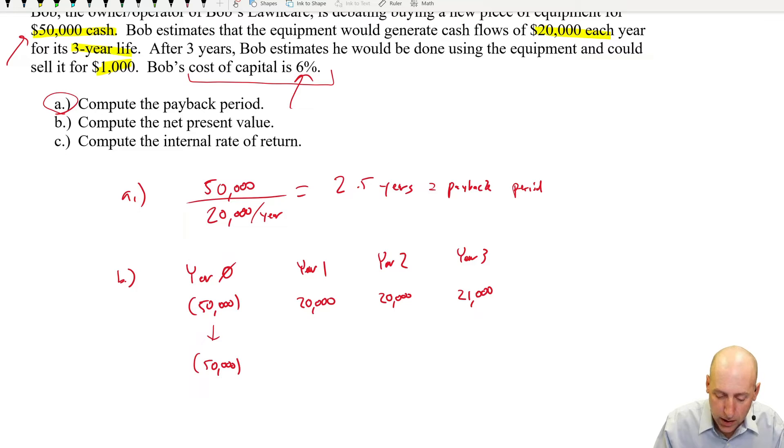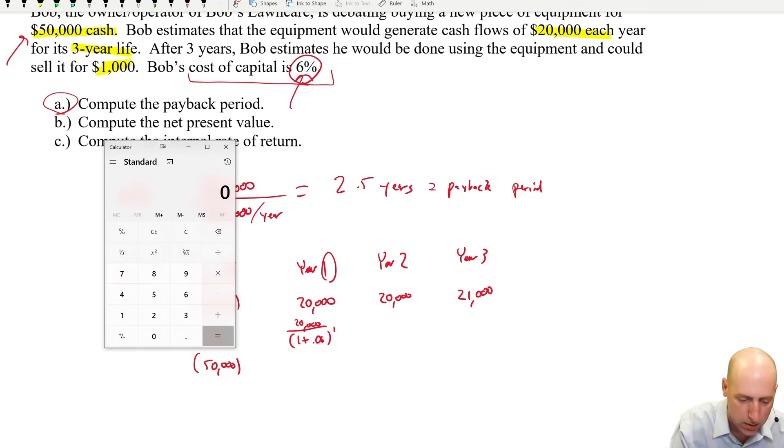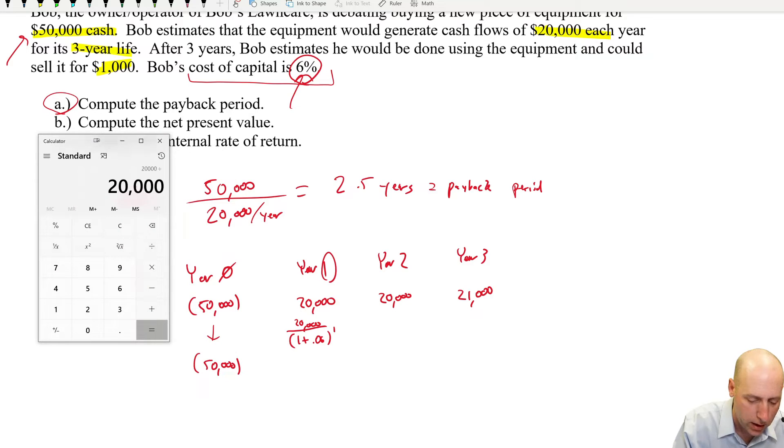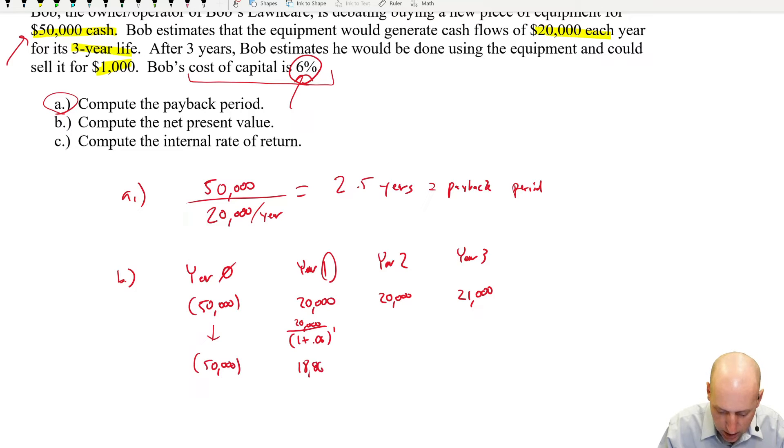For year 1, the formula here will be $20,000 divided by 1 plus the interest rate. In this case, the discount rate is 6%. 1 plus 6%, so 1 plus 0.06 raised to the power of whatever year it is, 1.06 to the 1. So 20,000 divided by 1.06 to the 1. I'm just going to calculate that with my calculator. 20,000 divided by 1.06 raised to the power of 1 is 18,868.